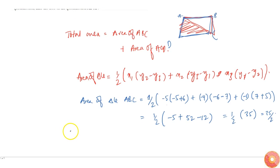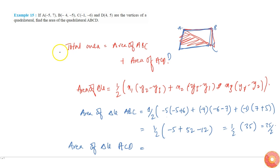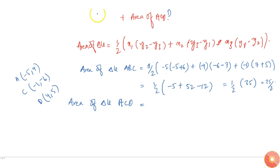And now area of triangle ACD is equal to, not to confuse I will write down this ACD here. So A is minus 5 comma 7, C is minus 1 comma minus 6, D is 4 comma 5. So if I just use them I will get this is equal to half into minus 5 into...